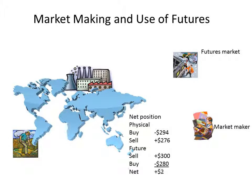In this particular example, the market maker ends up with a net profit of $2. This illustrates how a market maker, through the use of the futures markets, can manage its physical position and at the same time lock in a profit. This can be likened to arbitrage, because when the market maker does a physical trade, he immediately lays the risk off in the futures market, capturing in this case a net profit of $2.